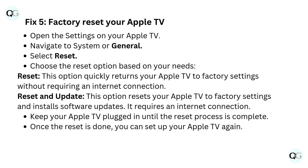Fix 5: Factory Reset your Apple TV. Open Settings, navigate to System or General, select Reset, and choose the reset option based on your needs. 'Reset' quickly returns your Apple TV to factory settings without requiring an internet connection. 'Reset and Update' resets your Apple TV to factory settings and installs software updates, but requires an internet connection. Keep your Apple TV plugged in until the reset process is complete.